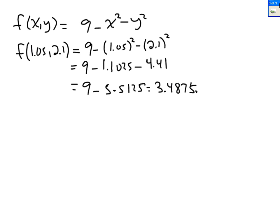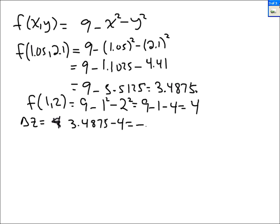So what we have is 9 minus 5.5125. The answer will be 3.4875. That's the exact answer. And f of 1,2 is 9 minus 1 squared minus 2 squared, which is 9 minus 1 minus 4, which is 4. So our change in z is the exact answer minus the approximate answer, which is negative 0.5125.